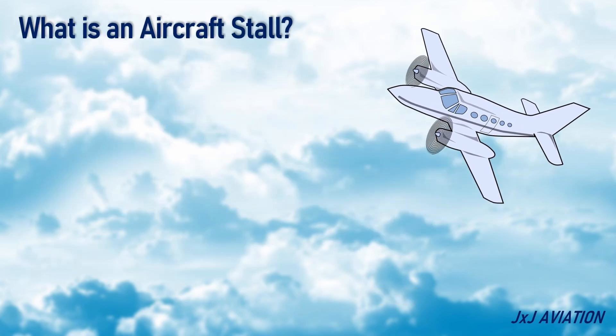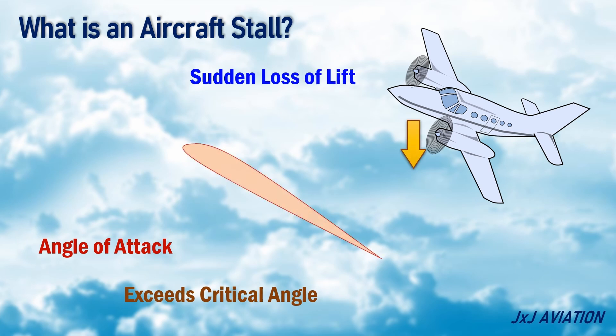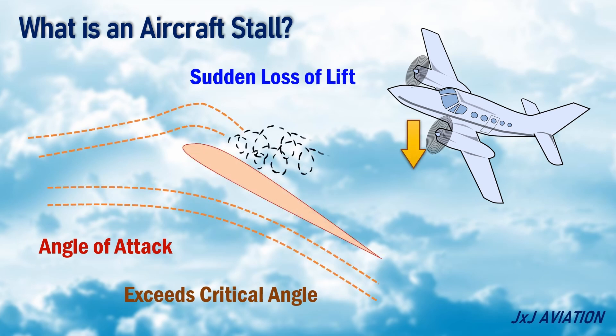What is an aircraft stall? An aircraft stall occurs when an aircraft's angle of attack exceeds the critical angle, resulting in a sudden loss of lift. This happens due to flow separation over the top surface of the wing.